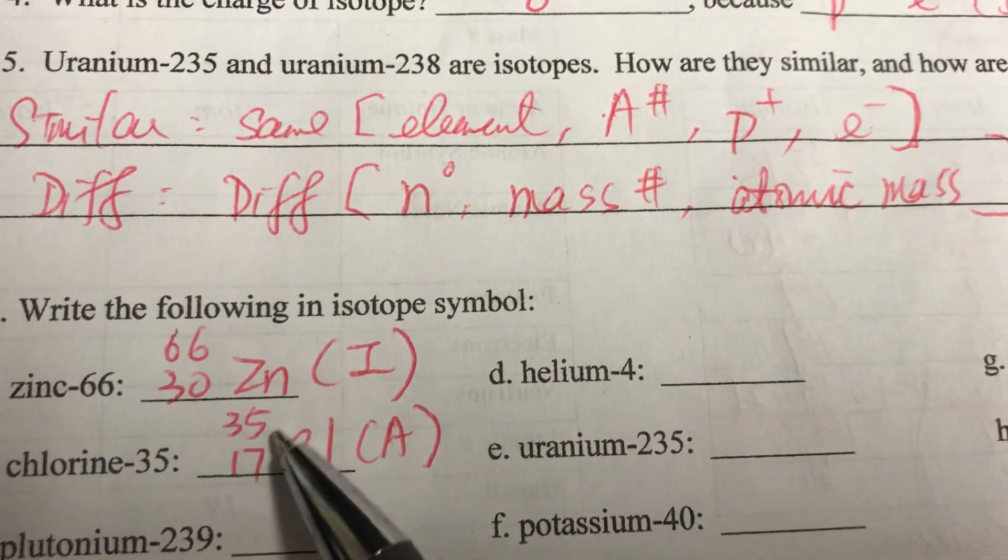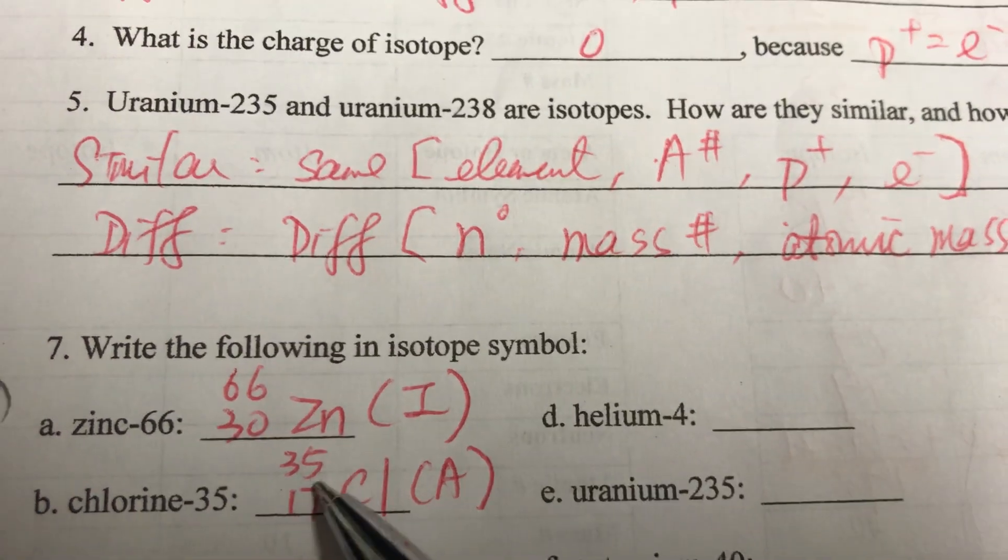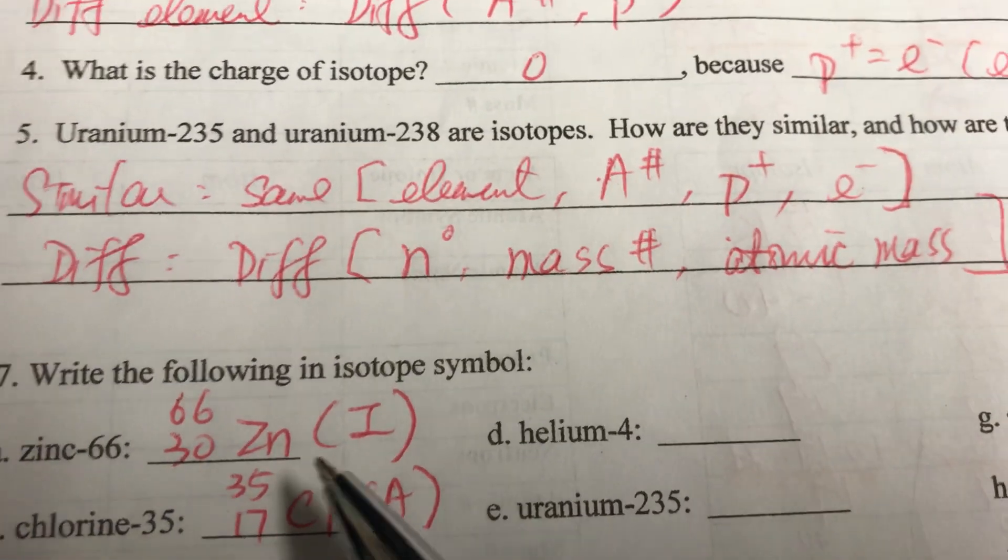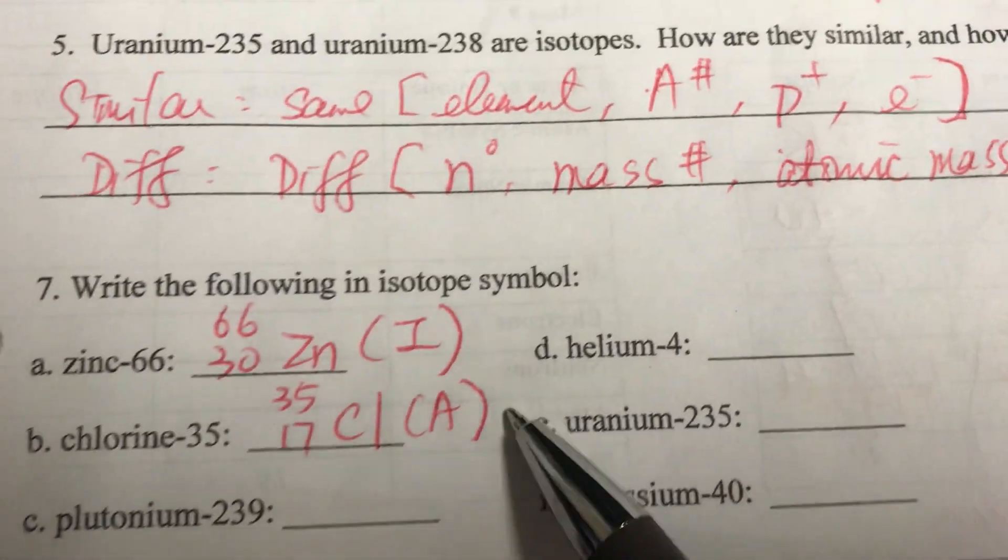And then for chlorine-35, you write down the mass 35, 17Cl. And this has the same mass number as the one on the periodic table after we round the atomic mass. So this is actually not an isotope.